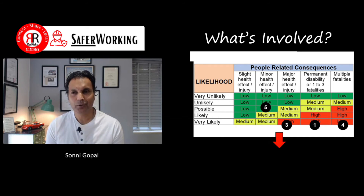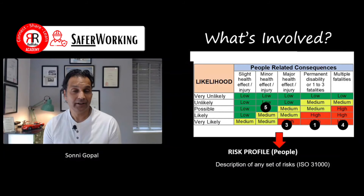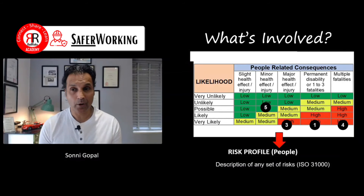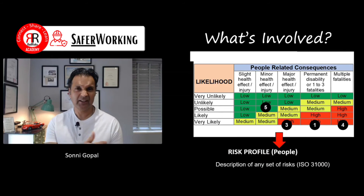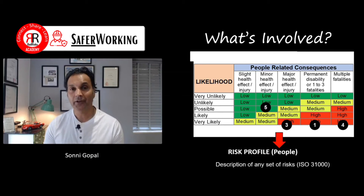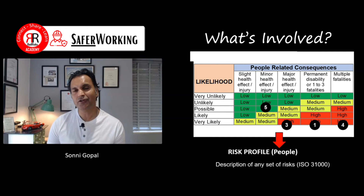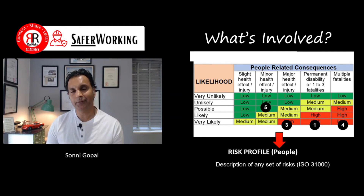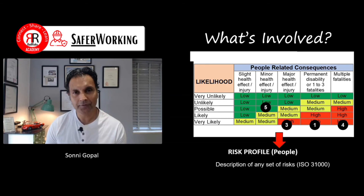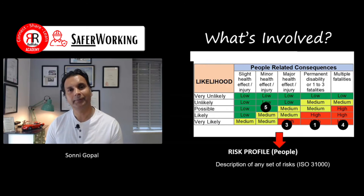Done it for the others as well, and you can see where the numbers are on that too. Essentially this is the risk profile for the organisation based upon people consequences for that particular area. It's very descriptive and very definitive in terms of where it sits within the organisation from a profile perspective.